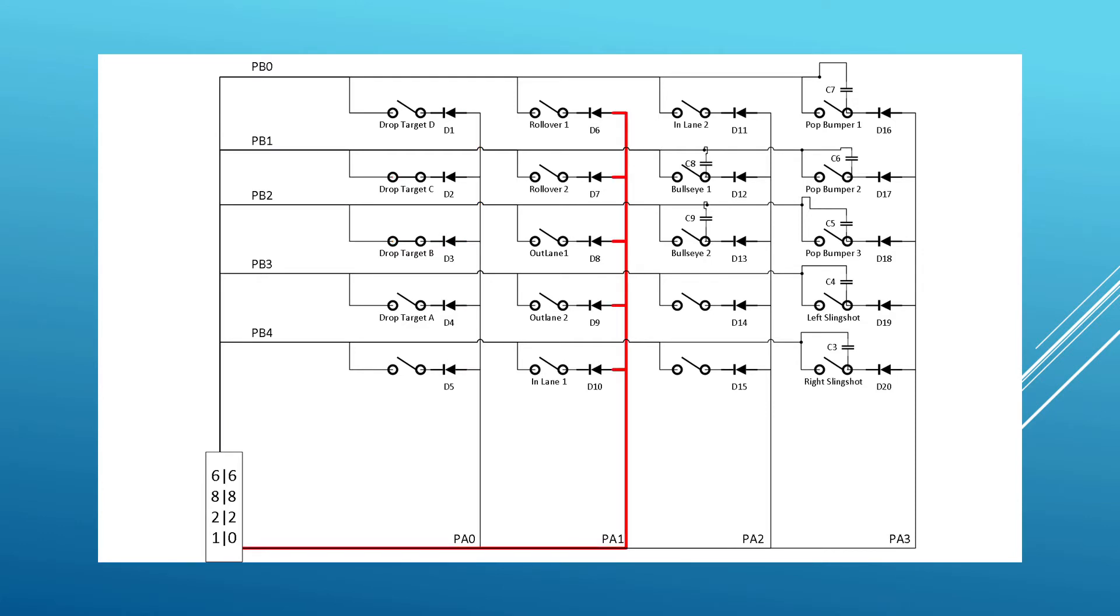The next pulse out goes out with no return pulses. The next pulse goes out PA2 and is heard back on PB2, indicating the hitting of bullseye 2. Events are triggered and points are scored.